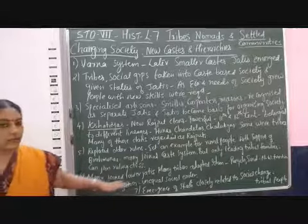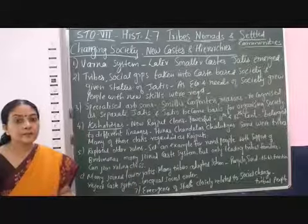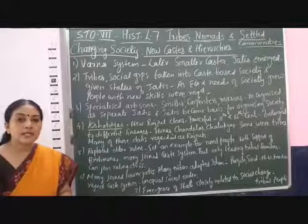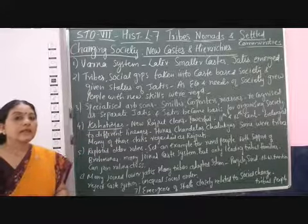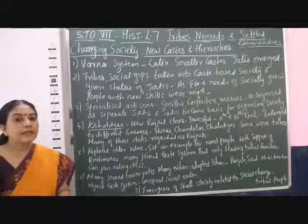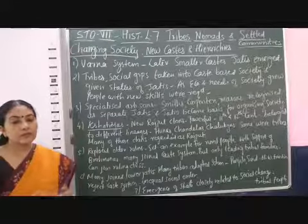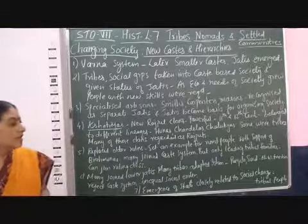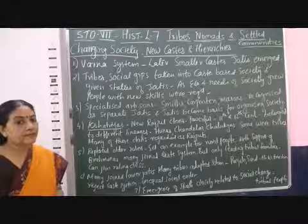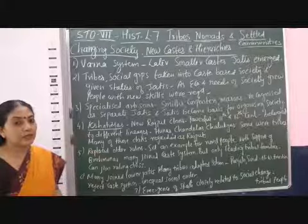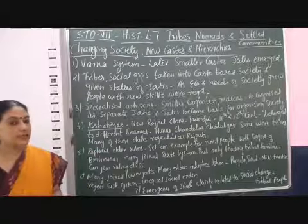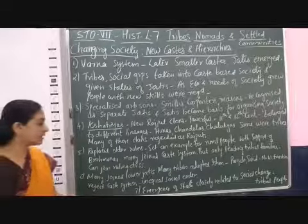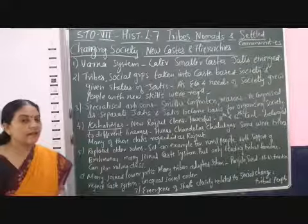Many tribes adopted Islam — those who did not want to join the Rajput clan but also did not want to join Hinduism due to its upper and lower caste distinctions converted to Islam. Especially the tribal people of Punjab, Multan, and Sindh — in these areas they converted to Islam and rejected the caste system, because the caste system maintained an unequal social order.